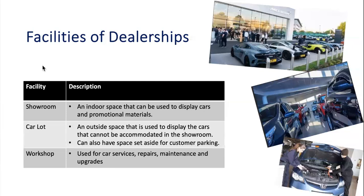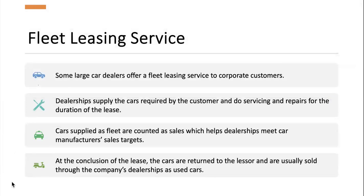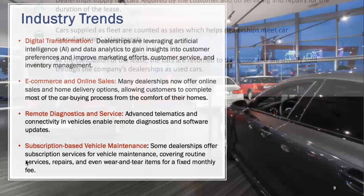Different types of facilities are provided within a dealership. There's a showroom designed to display cars and attract customers to drive sales. There's also a car lot — an outside space where used cars are kept so customers can check out and purchase used vehicles. A car dealership also comes with a workshop because routine servicing, repairs, and maintenance work are carried out. Regarding industry trends, there is a lot of digitalization within this industry. AI and data analytics have been utilized to understand the needs of customers, so you can recommend cars and upgrades as necessary, and similar information can be shared with car manufacturers to ensure they manufacture cars closely aligned with customer needs.